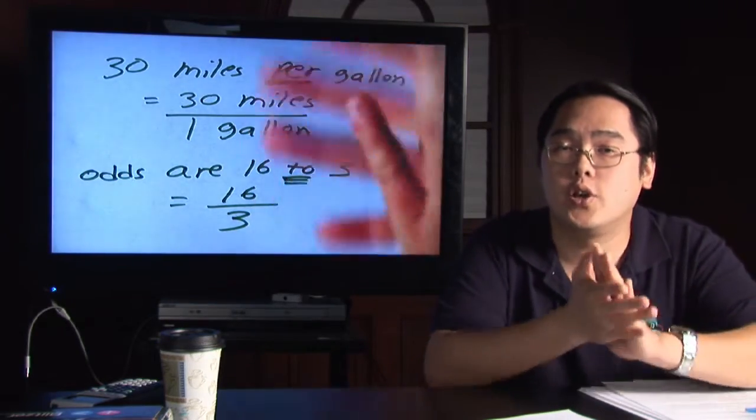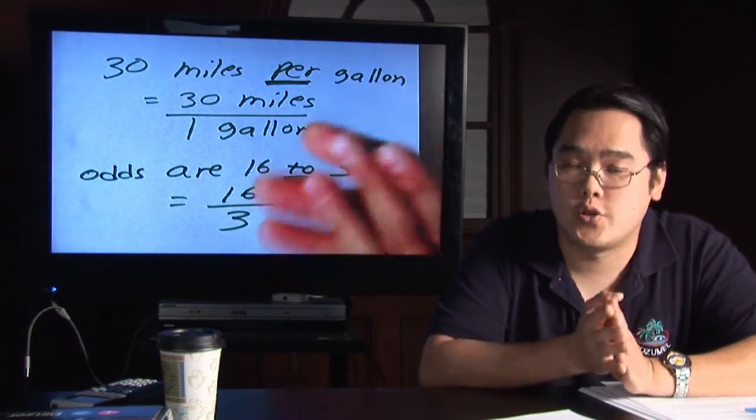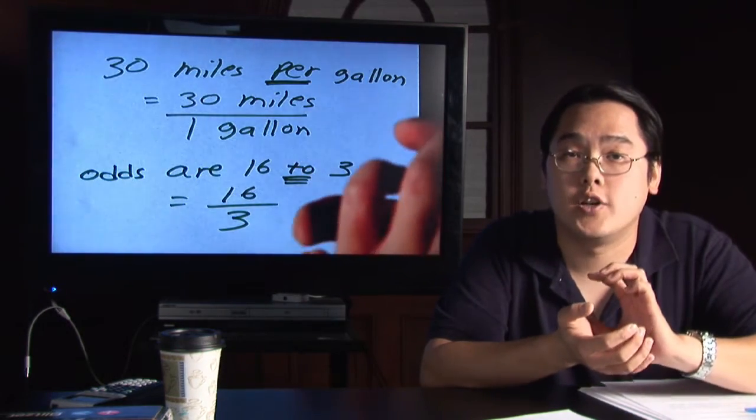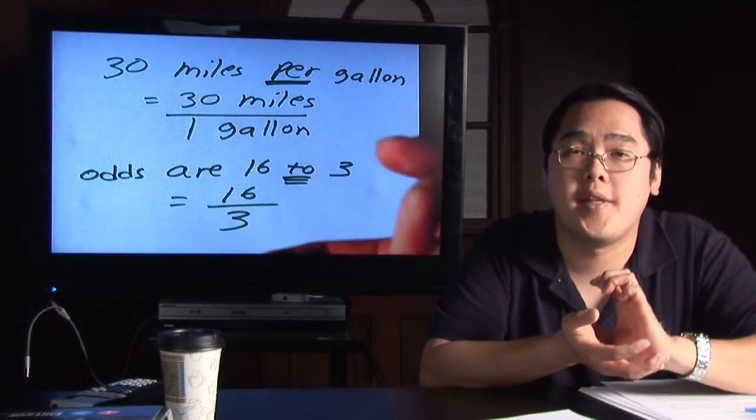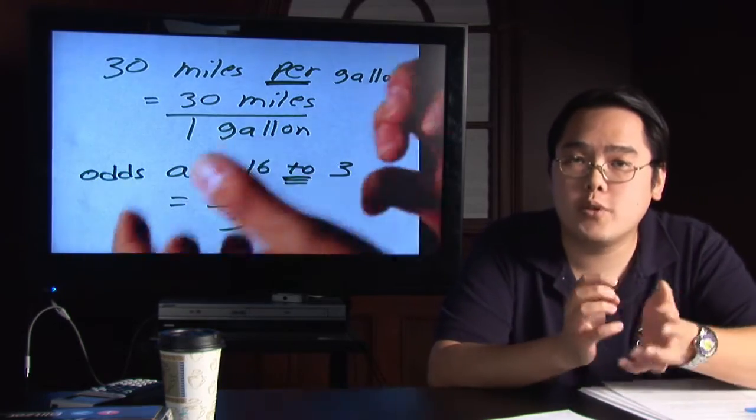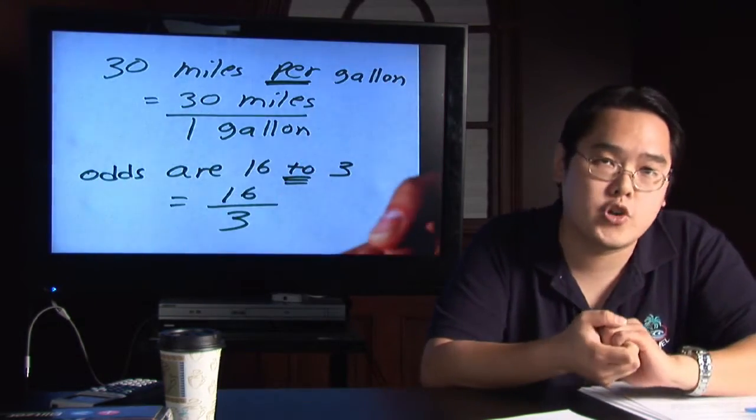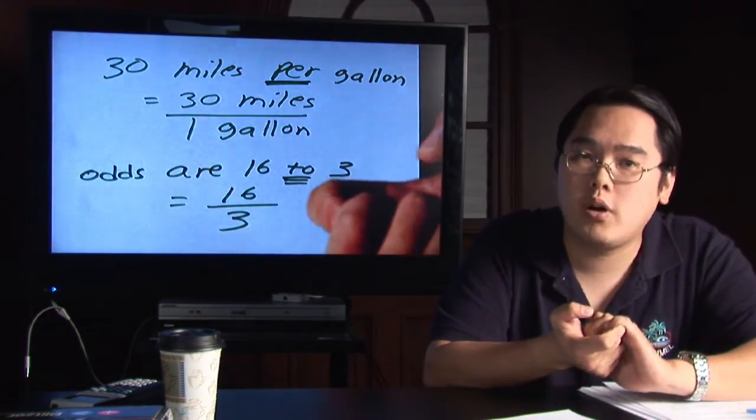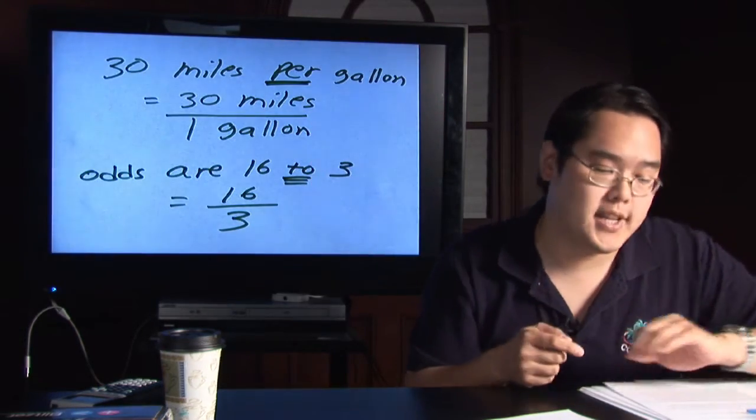Now, the key is to look for those words so you know what numbers need to be on top and what numbers need to be on the bottom. Here's a couple of words that pop up a lot in proportions. The first word is per, and the second word is to. Here's an example of each.